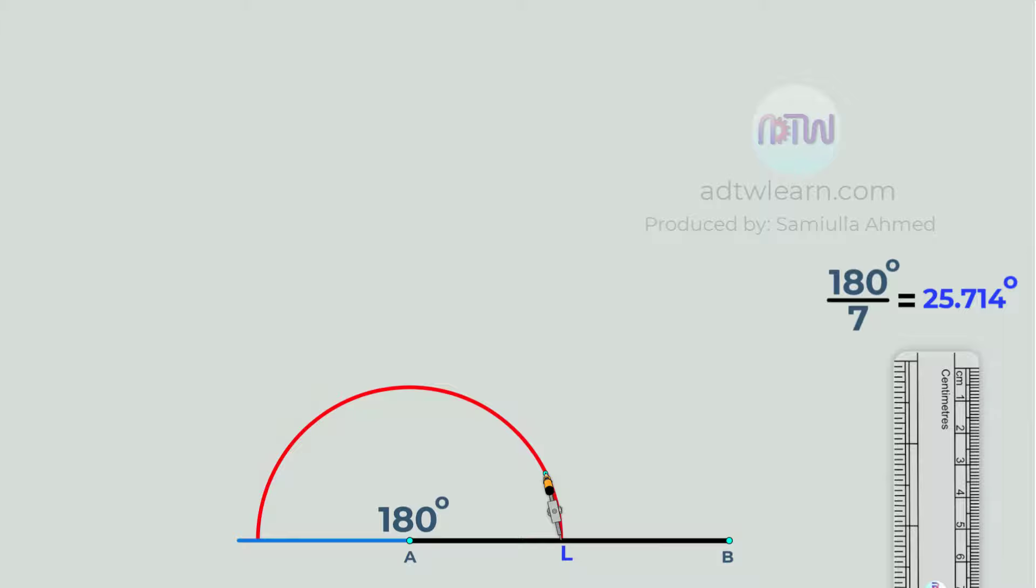Next, take a compass and adjust it to this length, and divide this arc into 7 equal parts.